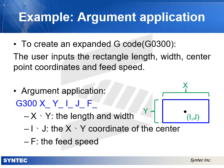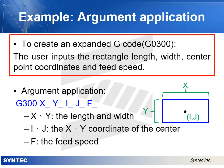Through practical example operations, you can learn Macro faster. In this example, we create an expanded G-code named G0300, where the user inputs the rectangle length, width, center point coordinates, and feed speed, and the controller machines the rectangle path according to the settings.